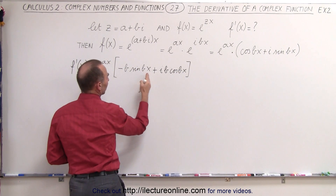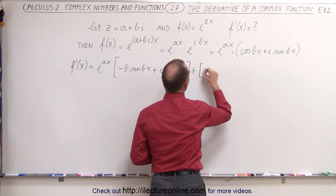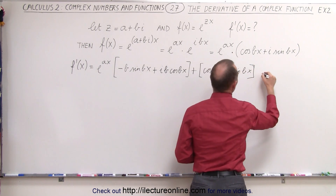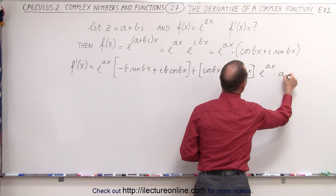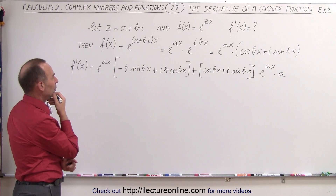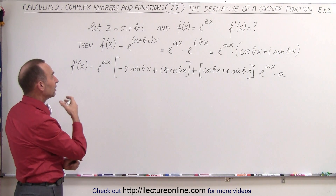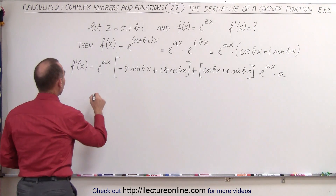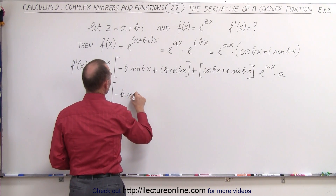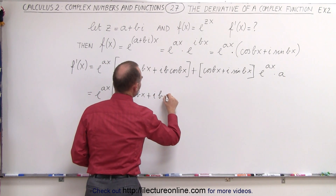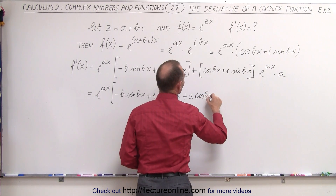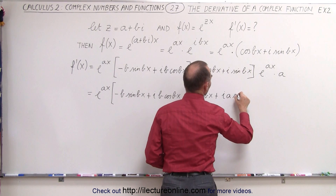So now we've taken the first times the derivative of the second, plus the second — which is the cosine of bx plus i times the sine of bx — times the derivative of the first, which is e to the ax times the derivative of the exponent, which is a. Now what we should do is probably just factor out an e to the ax, and then sum up everything that we have left. So we factor out e to the ax, and I have left: a minus b·sine(bx), plus i·b·cosine(bx), plus a·cosine(bx), plus i·a·sine(bx).